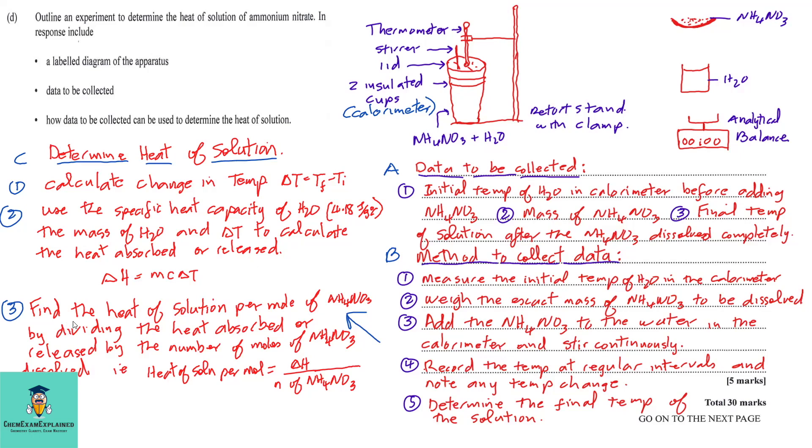We can then find the heat of solution per mole of ammonium nitrate by dividing the heat absorbed or released by the number of moles of ammonium nitrate dissolved. That is, the heat of solution per mole is equal to the enthalpy change divided by the number of moles of ammonium nitrate.